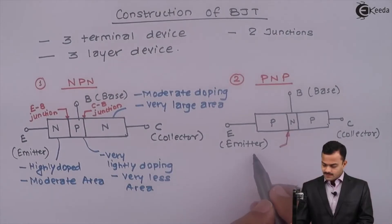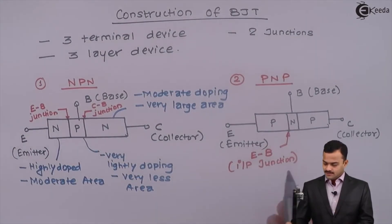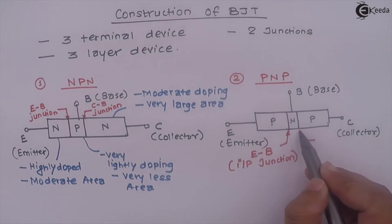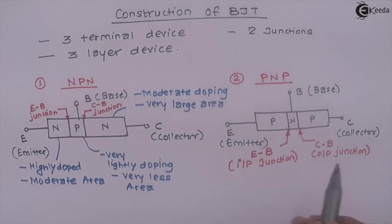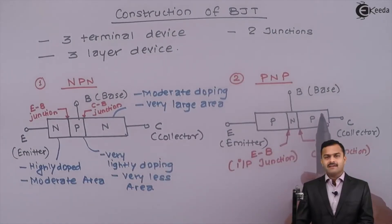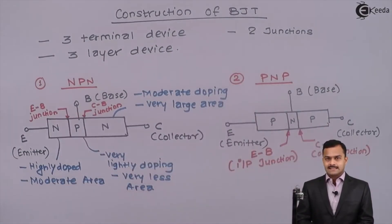This junction is Emitter Base or you can say Base Emitter Junction, also called Input Side Junction. Input Junction in a transistor is Base Emitter. Similarly, this junction we call Collector Base, which we call as Output Junction. Rest of the concepts of doping and area level is absolutely similar to that of NPN Transistor.